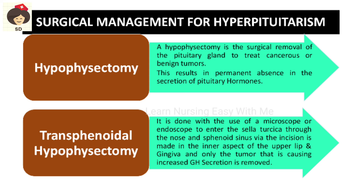In surgical management, hypophysectomy — removal of the pituitary gland — is done only for hyperpituitarism when cancerous or benign tumors are present. Open hypophysectomy removes the whole pituitary gland, eliminating all pituitary hormone secretion. The other approach is transsphenoidal hypophysectomy, performed through the mouth: an incision is made in the upper lip and gingiva, and through an endoscope they reach the sella turcica where the pituitary gland is located and remove only the tumor, so that only growth hormone secretion is decreased while other hormones are preserved.